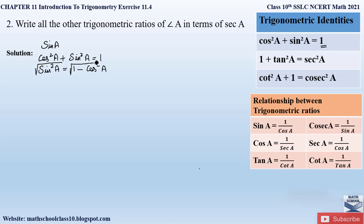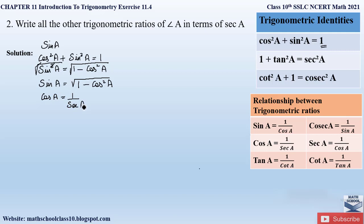Taking the square root on both sides, the square and square root cancel, so sine A = √(1 − cos²A). We also know from the table that cos A can be written as 1 by secant A, so we substitute cos A = 1/sec A. This gives sine A = √(1 − (1/sec A)²).